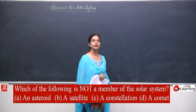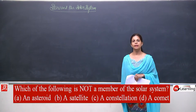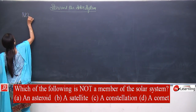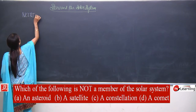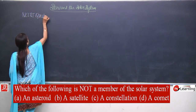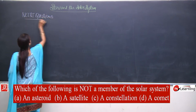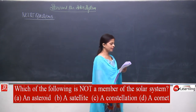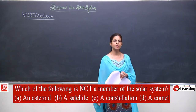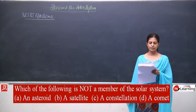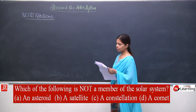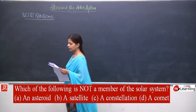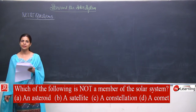Now we will talk about the NCERT question answers — the questions which are given in NCERT. Let us talk about question number 1, which is a 'choose the correct answer' type. Question number 1 is: which of the following is not a member of the solar system?